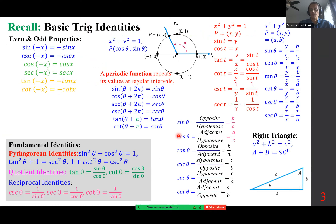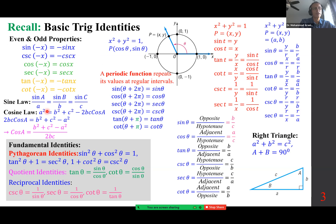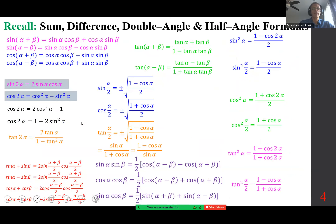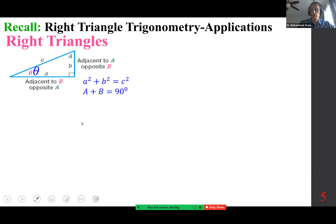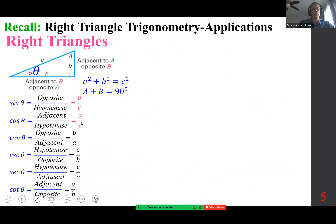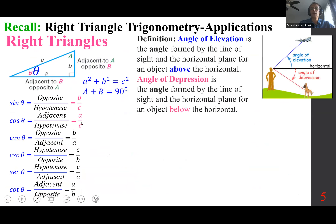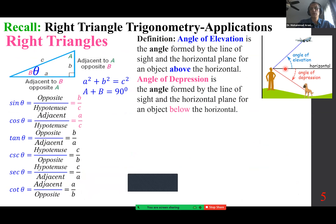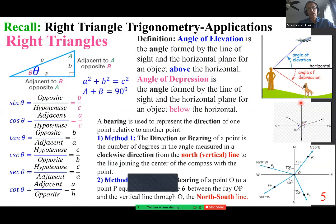Formulas that are basic trig identities you should be very comfortable with. We added the sine law and cosine law — more formulas. The relationship among sides a, b, c and angles capital A, capital B, and capital C. Angle of elevation compared to a horizontal line looking up, versus angle of depression.